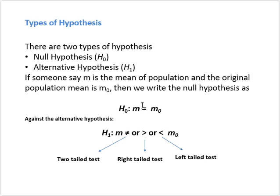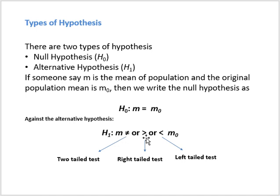If M equal to M0 is the null hypothesis, the opposite of the equal sign may be not equal to, greater than, or less than. So the alternative hypothesis H1 can be: M not equal to M0, M greater than M0, or M less than M0 — any one of them. If we test for M not equal to M0, it is called a two-tail test. If we test for the greater than sign — the stated mean is greater than the original mean — it is called a right-tail test. If the stated mean is less than the original mean, it is called a left-tail test.